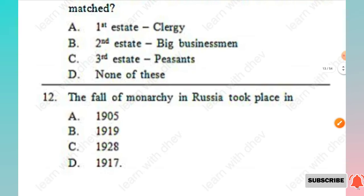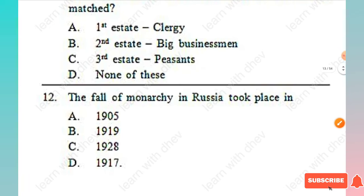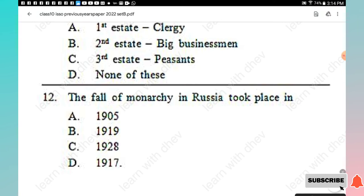Question 12: The fall of monarchy in Russia took place in — 1905, 1919, 1928, 1917. The right answer is Option D, 1917.